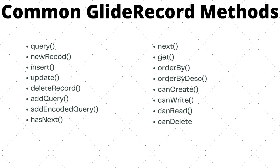Finally, we have canCreate, canWrite, canRead, and canDelete methods, which use ACLs — access control lists — within the system and determine if the current user has the ability to create, read, or delete the record. These are commonly used within ServiceNow script includes, which we will be seeing in the next section.